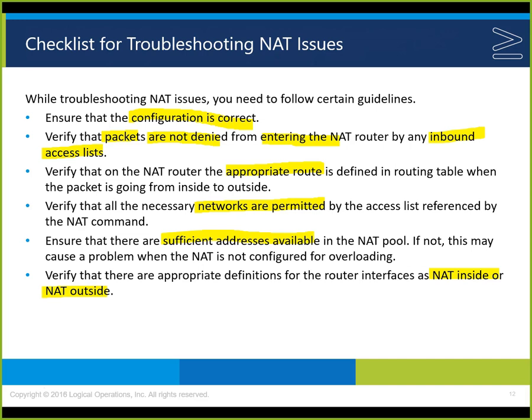Verify that the appropriate route is defined in the routing table when packets go from inside to outside, and verify all necessary networks are permitted in the access list. Access control lists are always going to be a factor here — do we have permit statements before deny statements, and are they in the correct order? One key troubleshooting tip: be sure whatever you're trying to do works before you apply the ACL, because if it didn't work before, it won't work after you put it on.